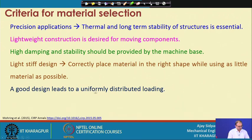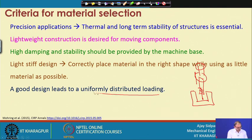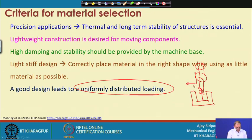A good design leads to uniformly distributed loading. We know that loading occurs at one concentrated point — for example, during a drilling operation the thrust force occurs at the tool, then goes to the collet and then to the spindle housing. As forces transfer from one component to another, the distributed loading should be uniform. If one component is more stressed than another, uneven deformation will occur, and you may get permanent deformation in the work piece geometry.